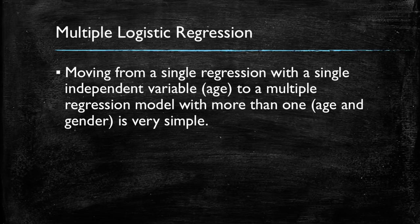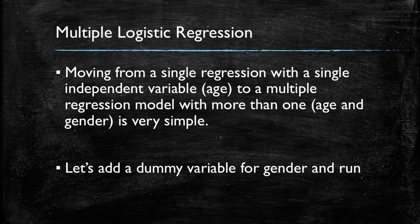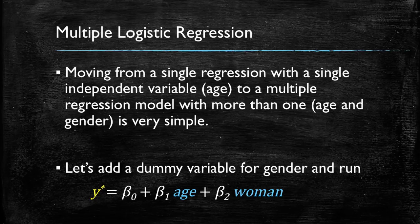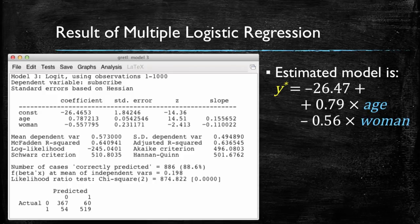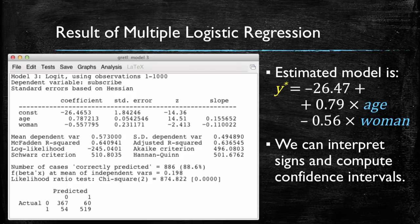Moving from a simple regression model with a single independent variable — in our case age — to a multiple regression model with more than one independent variable, using age and gender, is actually very simple. Let's simply add a dummy variable to represent gender, and run a model that has y-star equal to beta zero plus beta one times age, plus beta two times our dummy variable to indicate if a particular observation is a woman. We run it in a statistical package such as Gretel, and we find an intercept of minus 26.47, a slope for age of positive 0.79, and a slope for woman of negative 0.56. As we did before, we can interpret the signs of the coefficients and compute confidence intervals.